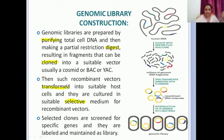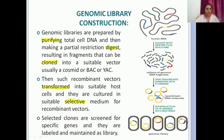Such recombinant vectors are transformed into suitable host cells — these could be E. coli or yeast — and they are cultured in a suitable selective medium for recombinant vectors. Only transformed clones will grow in that media. Selected clones are screened for specific genes, then labeled and maintained as the library. This is the general genomic library construction.